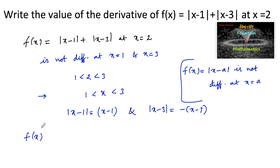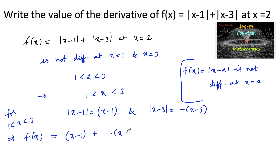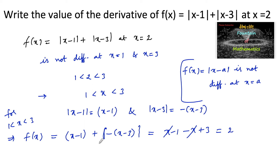Since we require the value for x = 2, which lies between 1 and 3, f(x) = |x-1| + |x-3| becomes (x-1) + (-(x-3)). Simplifying: x - 1 - x + 3, the x terms cancel, giving 3 - 1 = 2. So f(x) = 2.